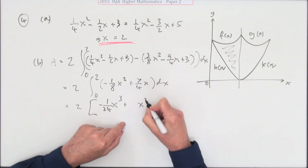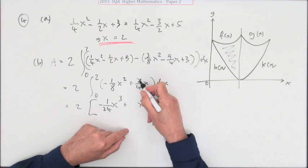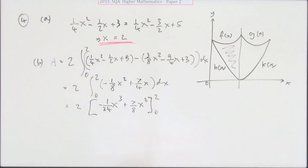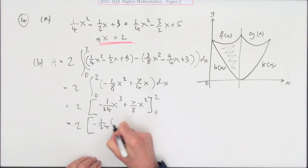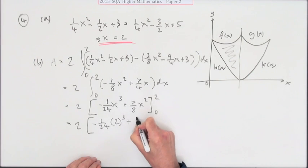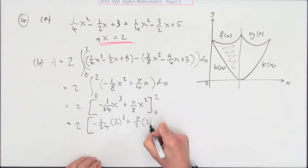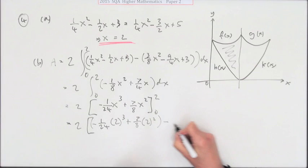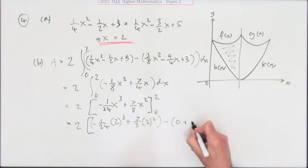Power 1 goes to power 2, divide by 2, won't cancel the 7, so that's 7/8, to be evaluated. Substitutions: you've got -1/24 of 2³ and 7/8 of 2², minus zero.